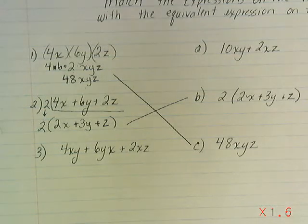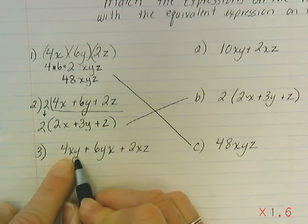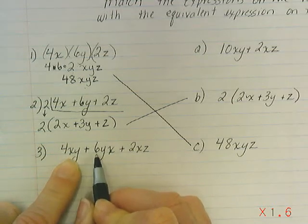By process of elimination, number 3 must be the same as A, but let's see why that works. I notice that even though this says 4xy, this term is 6yx.